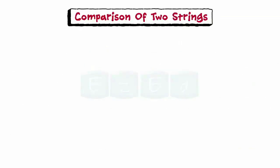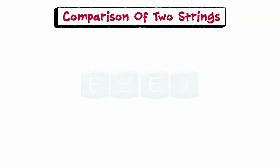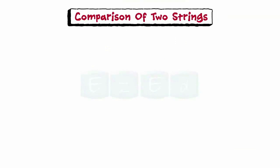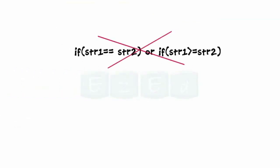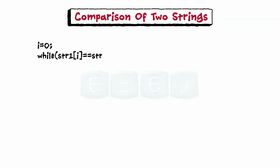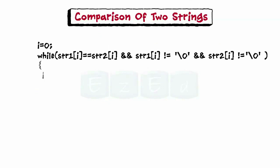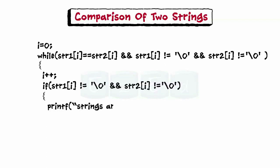Now let us learn the comparison of two strings. C does not permit comparison of two strings directly, so direct comparison statements are not allowed. This is done by comparing the strings character by character until there is a mismatch or the string is terminated with a null character, whichever comes first.